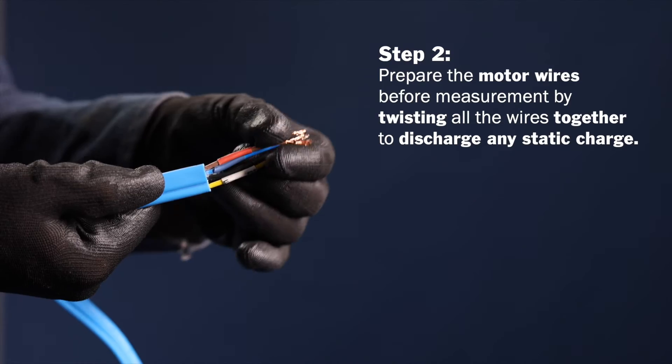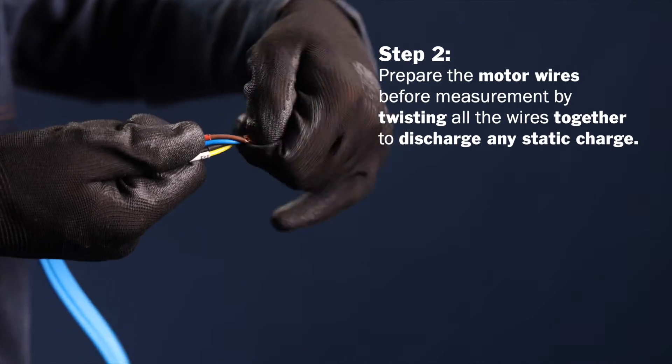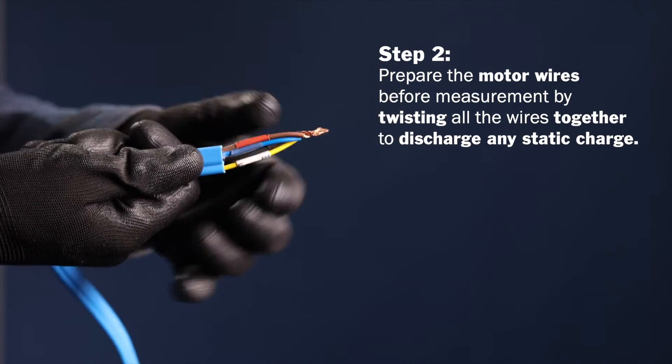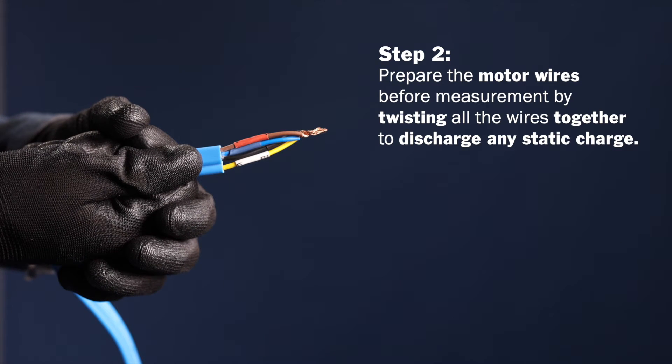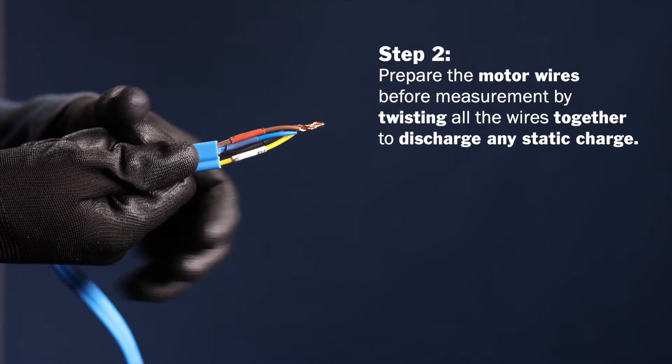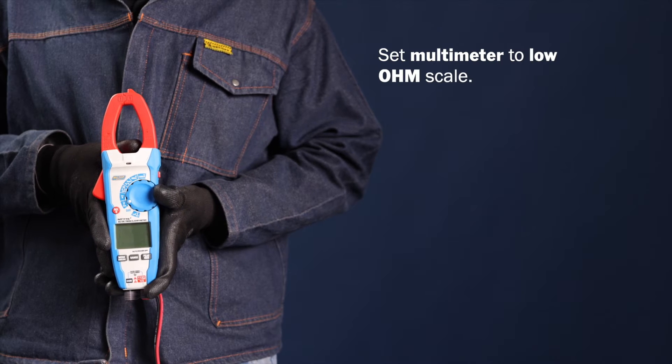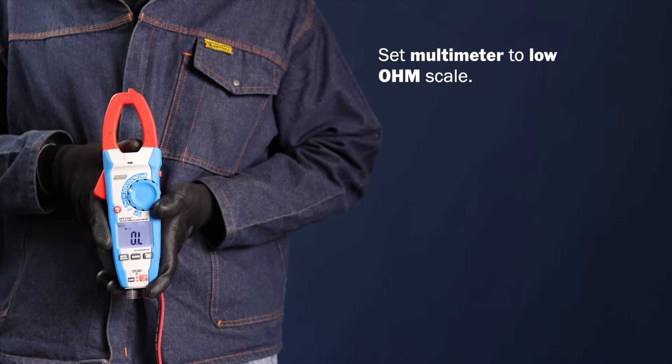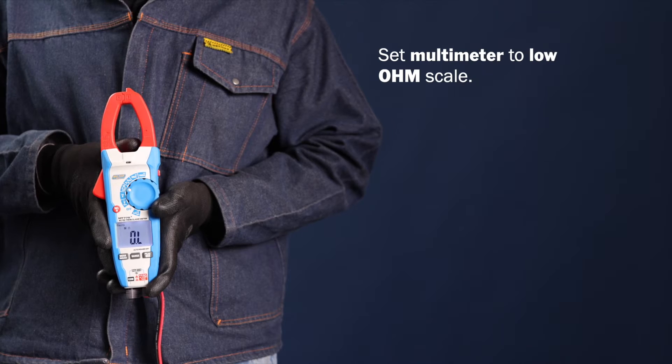Step 2. Prepare the motor wires before measurement. Start by twisting all the motor wires together for a few seconds to discharge any possible static charge in the motor. Next, set your multimeter on a low ohm scale capable of measuring up to 100 ohm resistances.